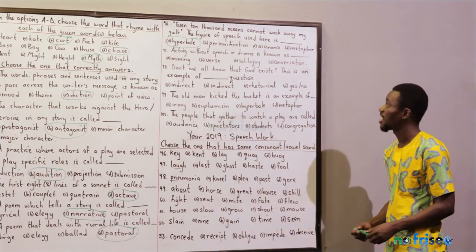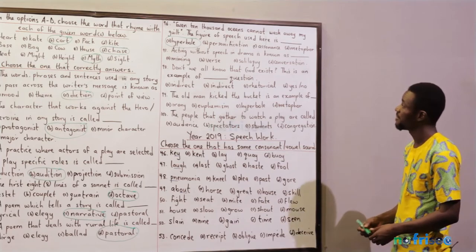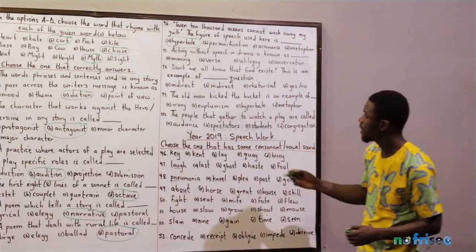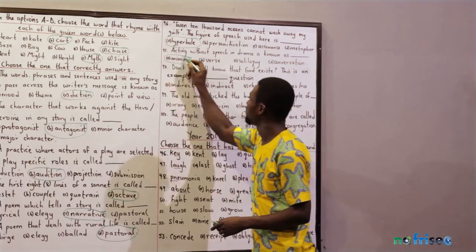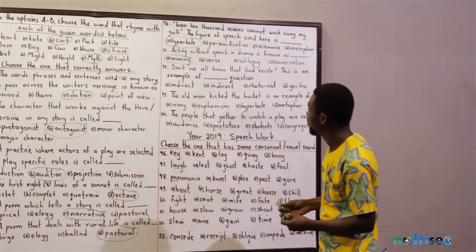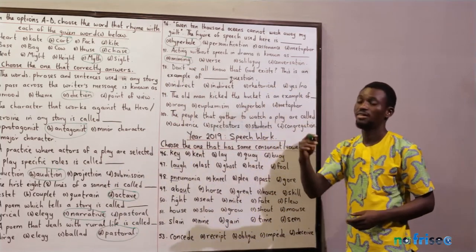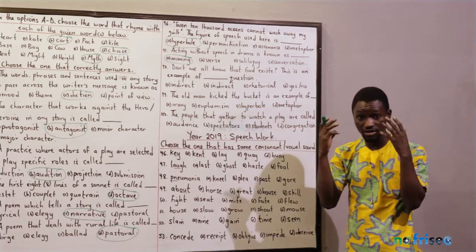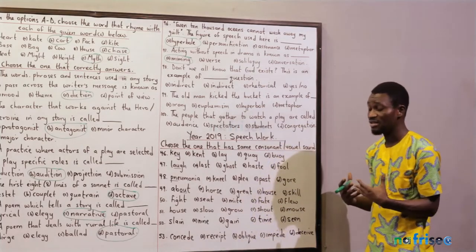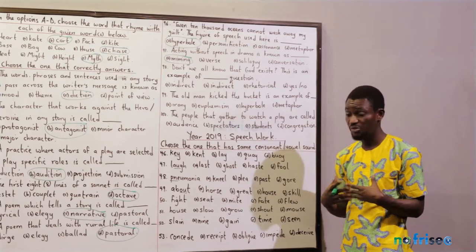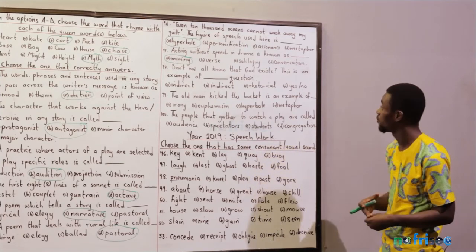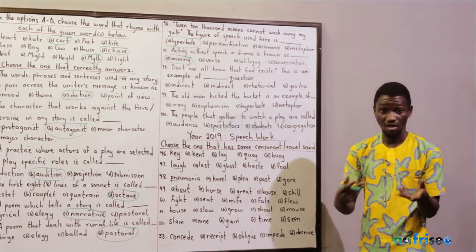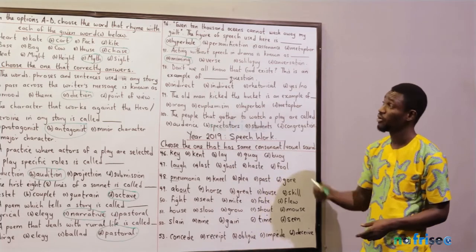Question 97: acting without speech in drama is known as — mime, verse, or conversation? That's mime. Mime is acting without speech. Verse refers to the lines in a poem. Soliloquy is when a character thinks or speaks to himself without other characters hearing. Conversation is dialogue — communication between two people.